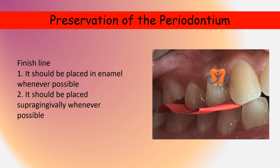Coming to our last principle: preservation of periodontium. This is very important. Closest to the gingiva is present our finish line of the tooth. To preserve the periodontium it is very important that our finish line is placed in enamel and also placed supra-gingivally whenever possible. You can see how smoothly the margins are adapted and how well the transition is there between the tooth and the gingiva.